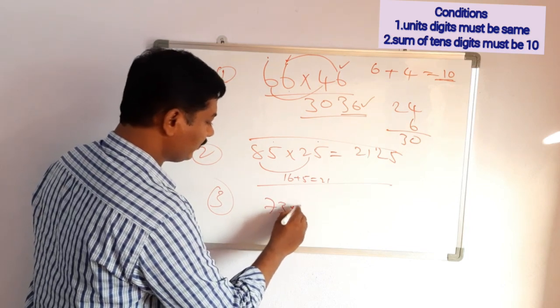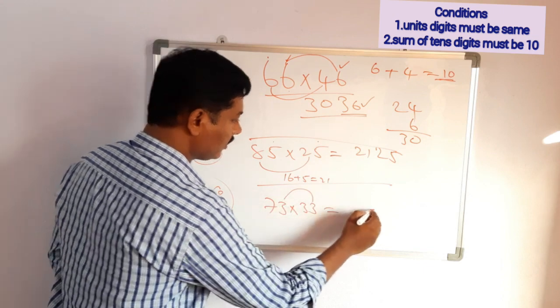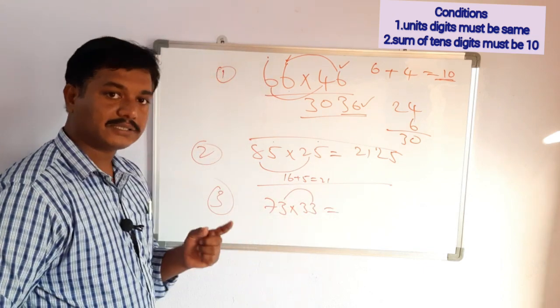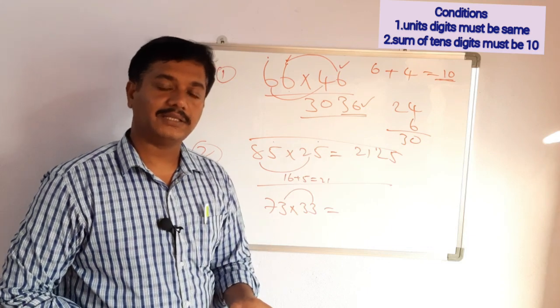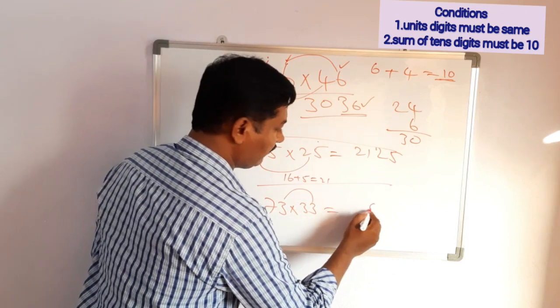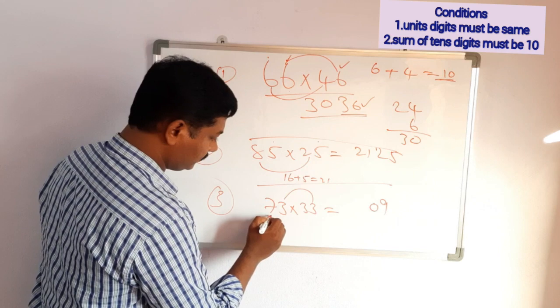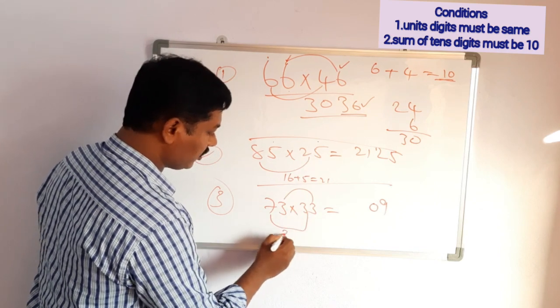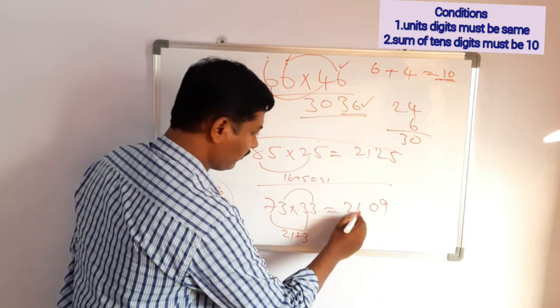73 times 33. 3 times 3 is 9. Here we got a single digit. If we get a single digit like this, before the single digit we add 0. So 3 times 3 is 9, before 9 we keep 0. Next, 7 times 3 is 21. We add the units digit. 21 plus 3 equals 24. So we got the answer, 2409.